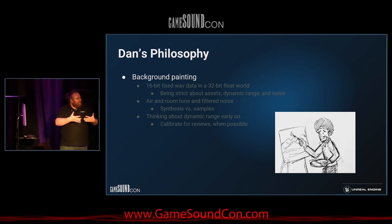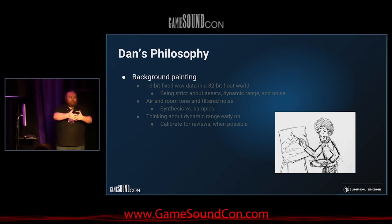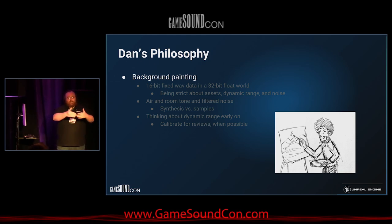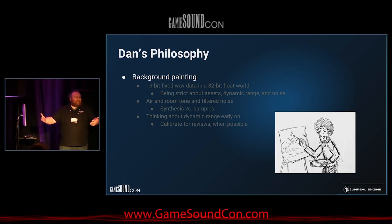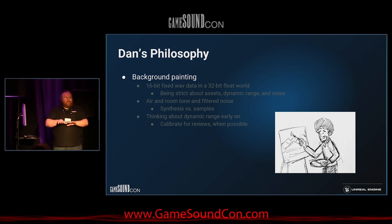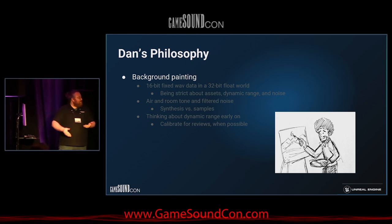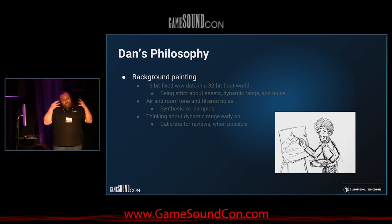You'll note that Bob Ross always starts with a distant background — first layering in the sky coloring, then building out background mountains. A lot of his paintings are very similar. Then he starts fleshing in a mid-ground area, and of course the infamous happy trees tend to be near the front. I like to think of building out a soundscape with that metaphor.